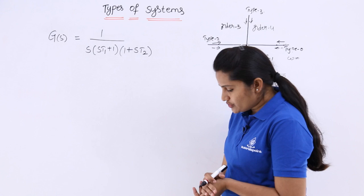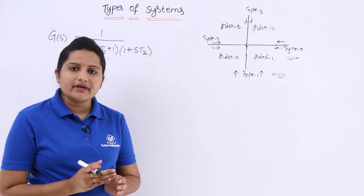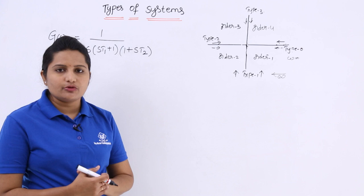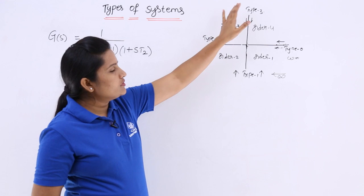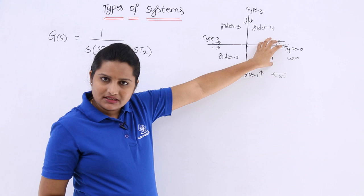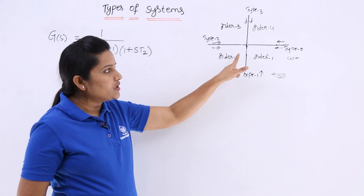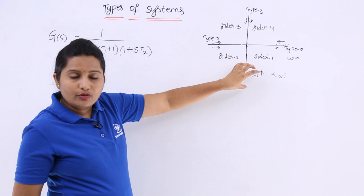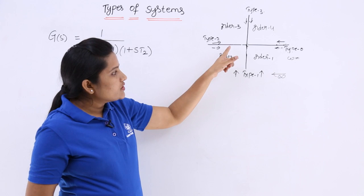To draw the polar plot or Nyquist plot, first you need to estimate in which coordinate the plot is going to take place by referring this diagram. This shows type 0, type 1, type 2, and type 3 coordinates. If the system is type 0 order 1, it starts and ends in the same coordinate. If type 0 order 2, the plot starts and ends in different coordinates. If type 1 order 3, the polar plot starts at one coordinate and ends at another. For type 2 order 3, both starts and ends in the same coordinate.